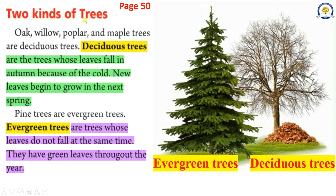Two kinds of trees. Oak, willow, poplar, and maple trees are deciduous trees. Deciduous trees are trees whose leaves fall in autumn because of the cold, and new leaves begin to grow in the next spring. Pine trees are evergreen trees. Evergreen trees are trees whose leaves do not fall at the same time — they have green leaves throughout the year.